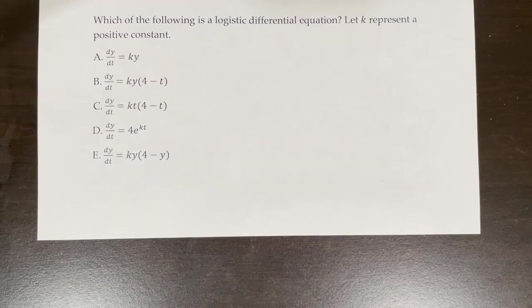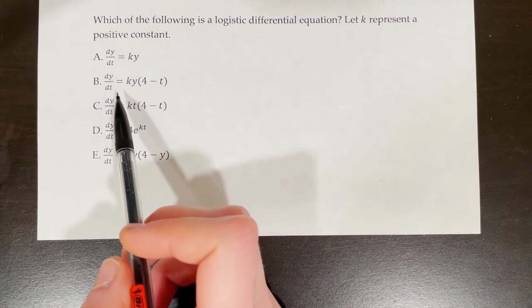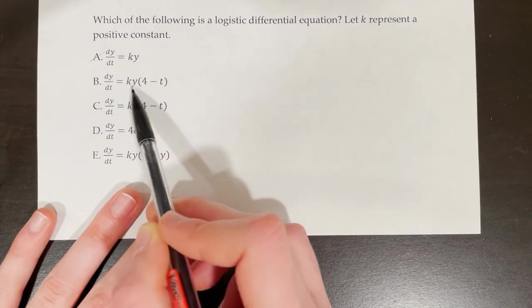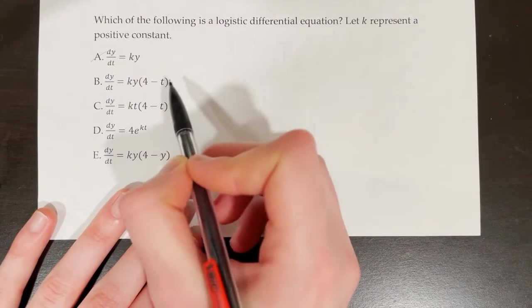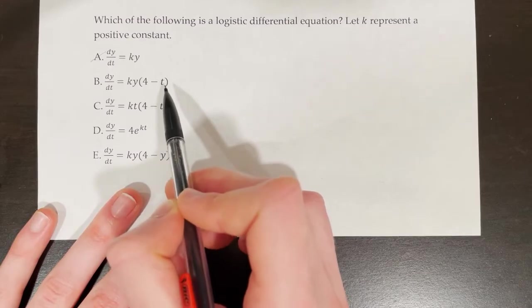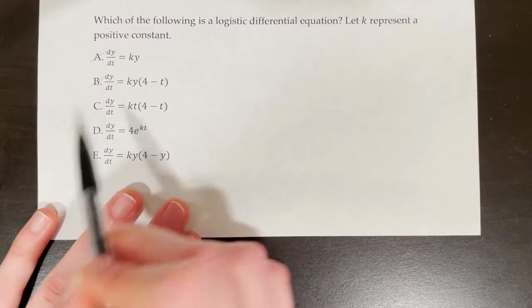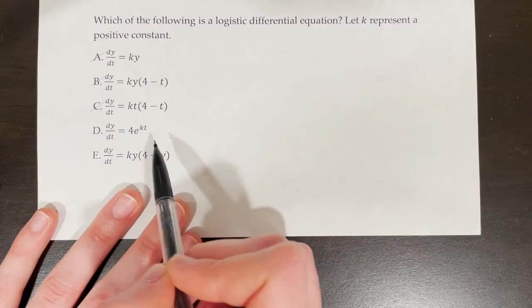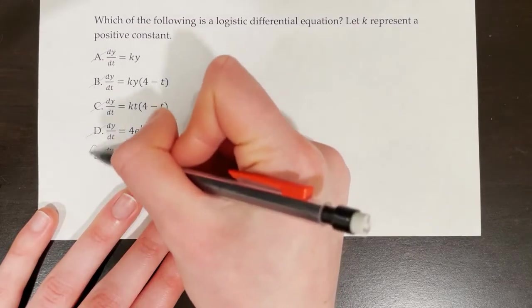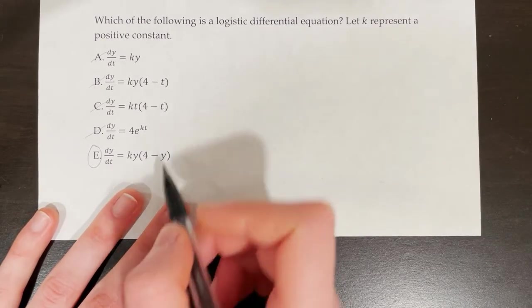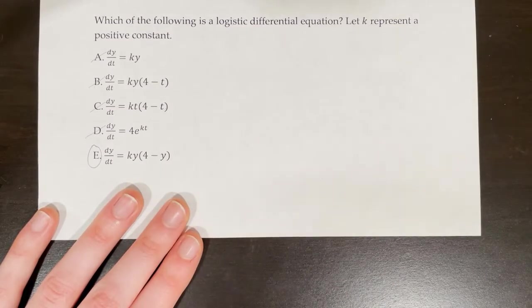Which of the following is the logistic differential equation? Choice A, dy/dt equals ky, doesn't follow the logistic rule. Choice B, dy/dt equals ky times (4 minus t), would be logistic if it said y, but t is the independent variable so it's wrong. Choice C also has t in place of y, so it's not correct. Choice D doesn't match either. But choice E, dy/dt equals ky times (4 minus y), is a logistic differential equation with L equal to 4.